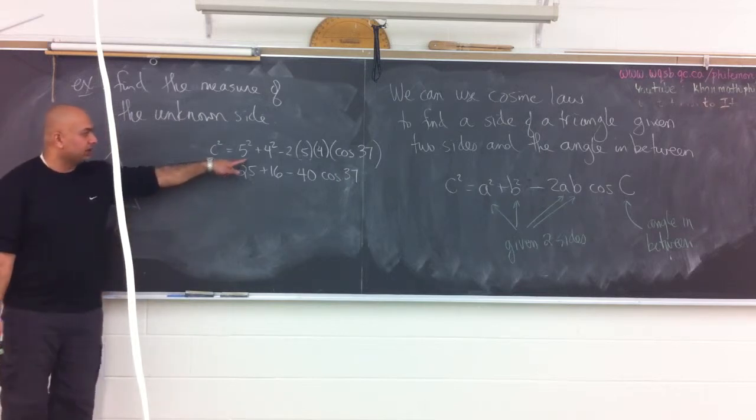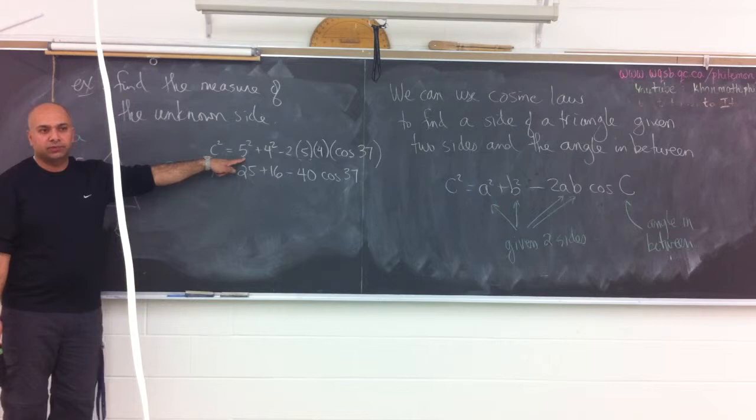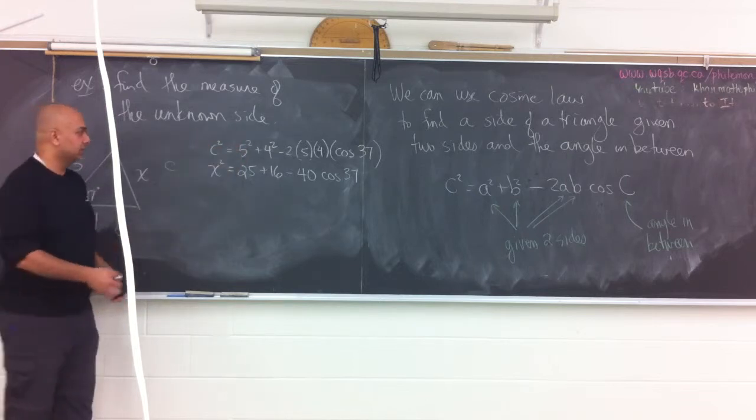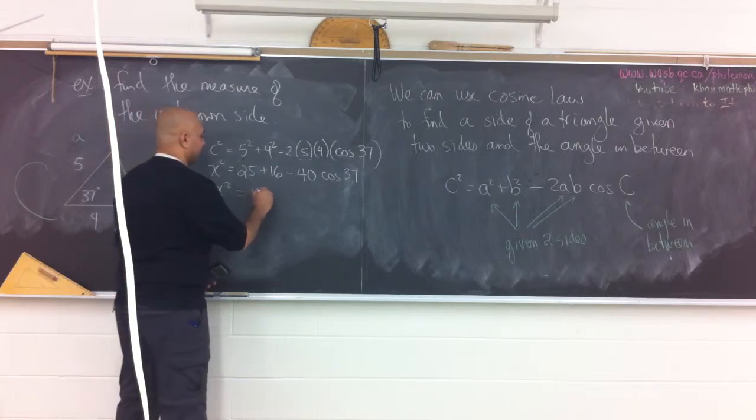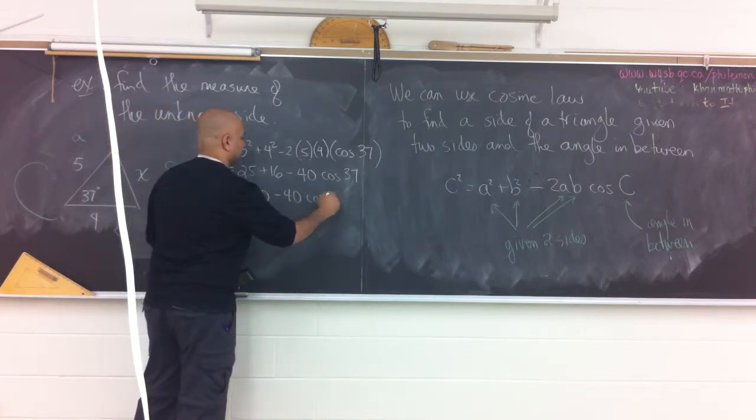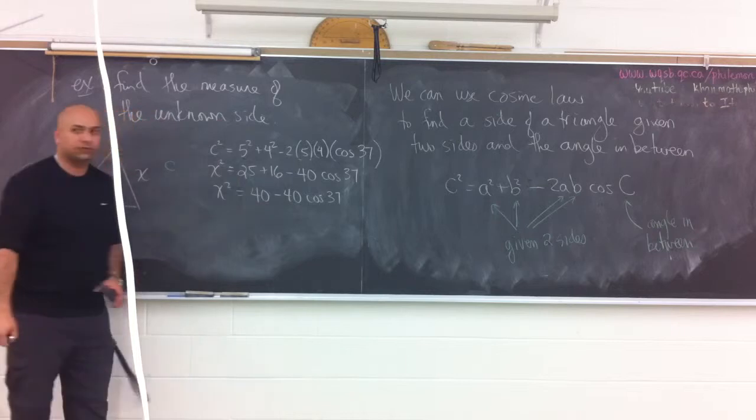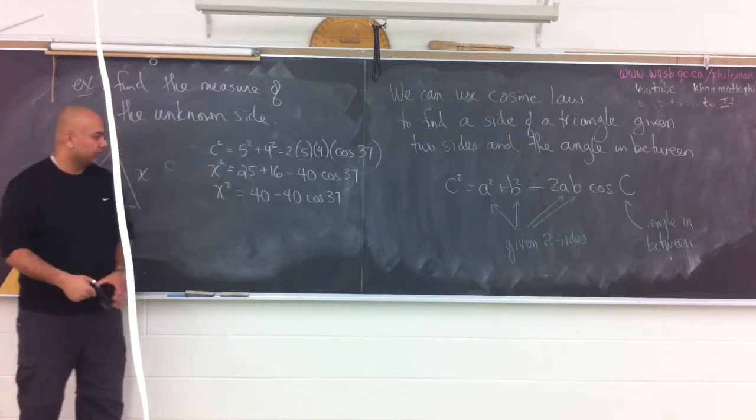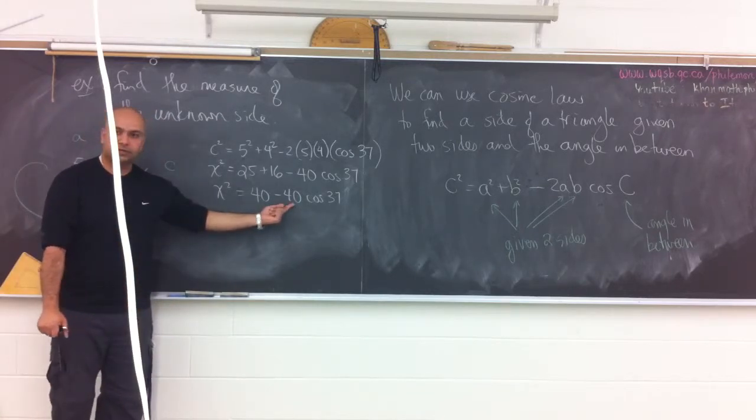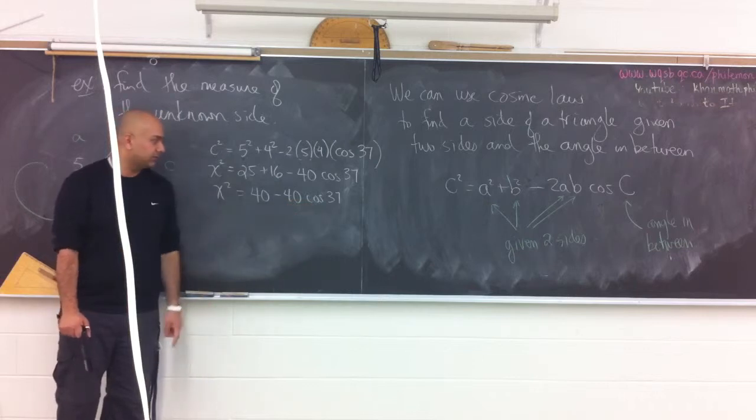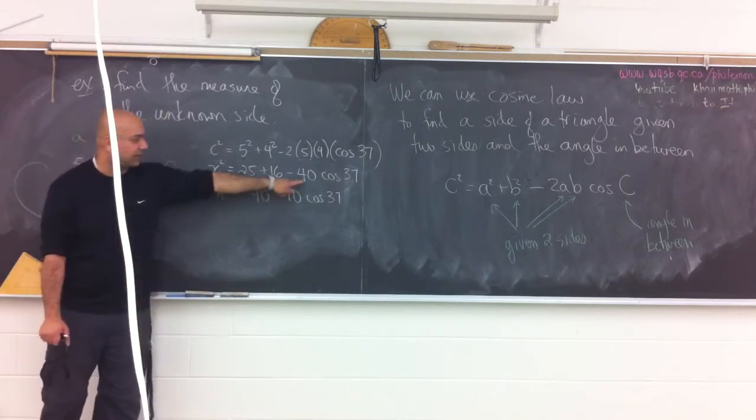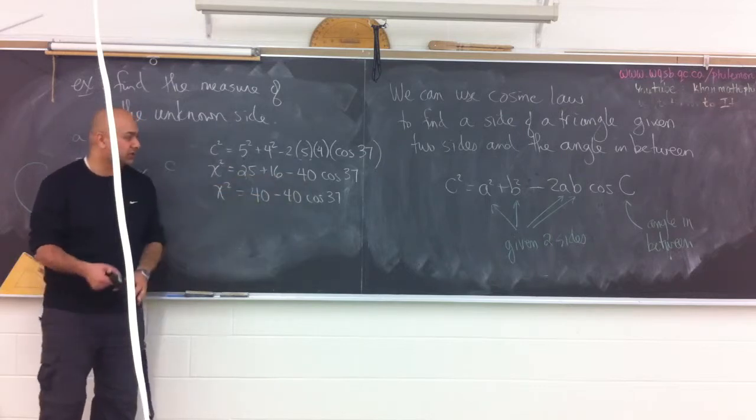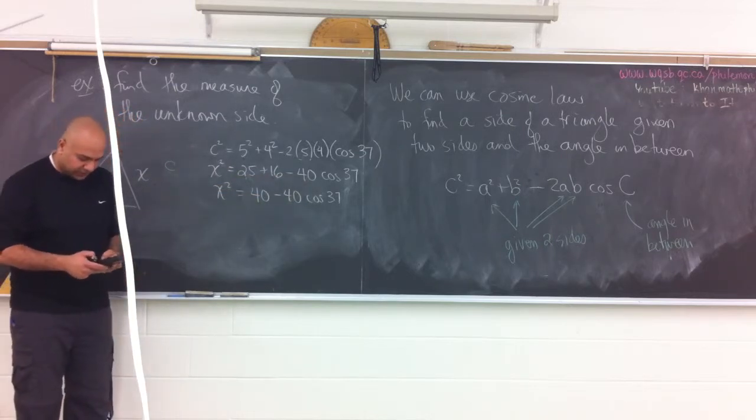I'll just do this part. 2 times 5 times the 4 will give us negative 40, and then we still have it times cosine 37. If you want to put that in brackets, you can, depending on your calculator on how to do this. Most of you can just type this all in one line. But again, I'm just doing the steps to make sure that we know what's happening here.